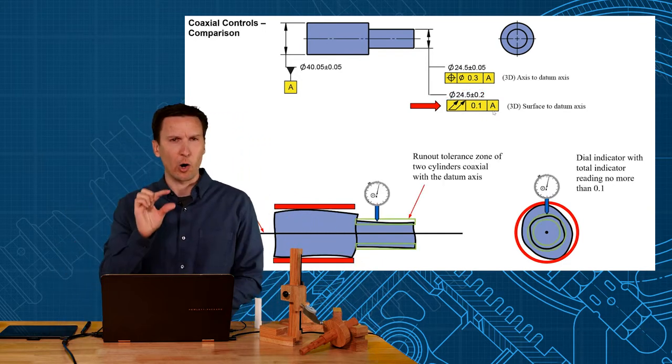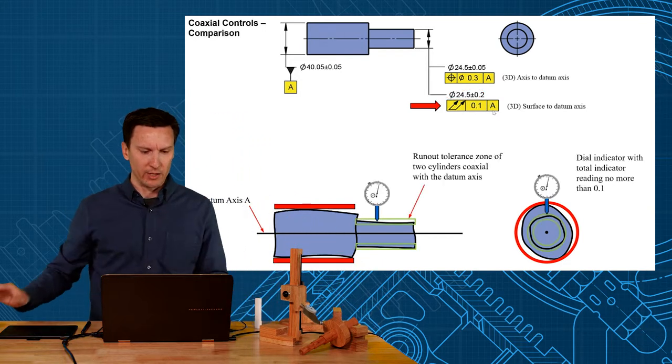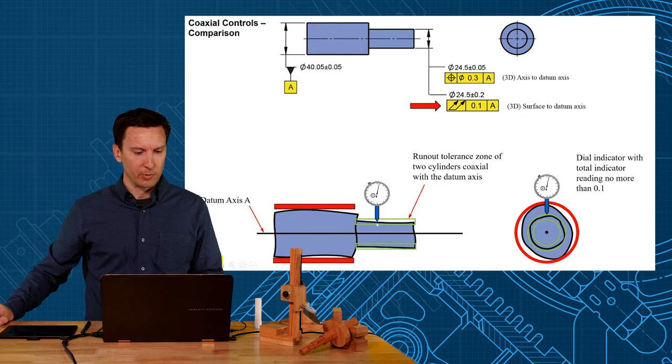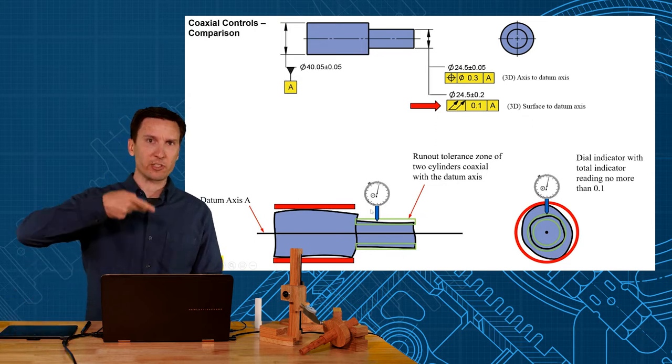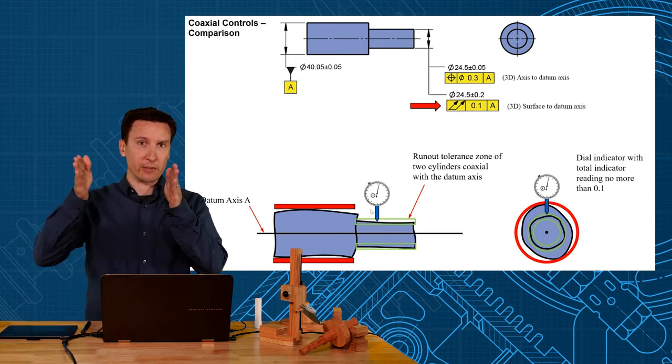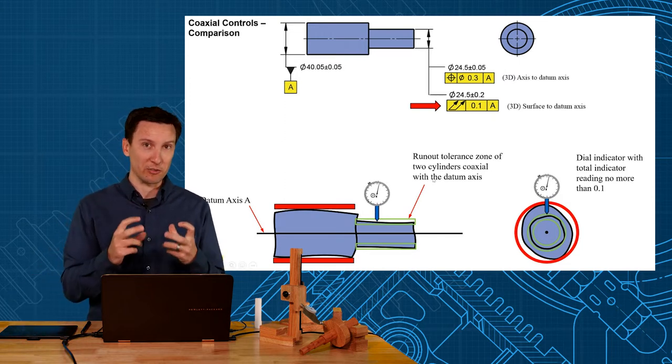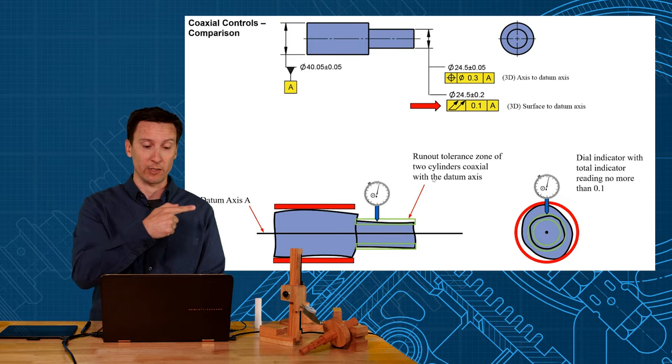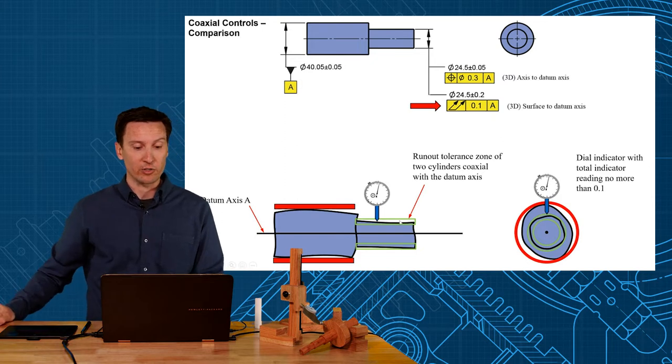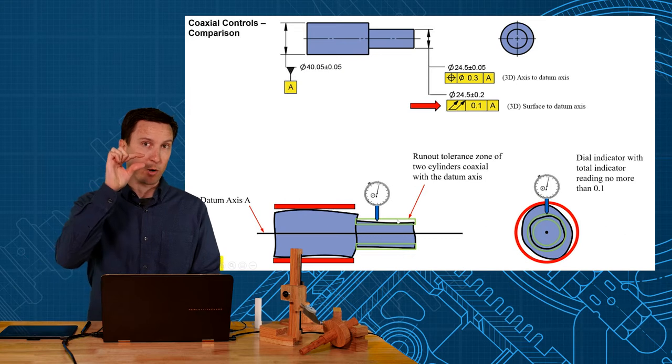Now when you think about TIR, what does that really create? As the indicator goes up and down as you're rotating 360 degrees and moving along the length of that shaft, it creates a tolerance zone of two concentric cylinders that are also concentric with the datum axis. Now our surface has to lie within these two concentric cylinders 0.1 apart.